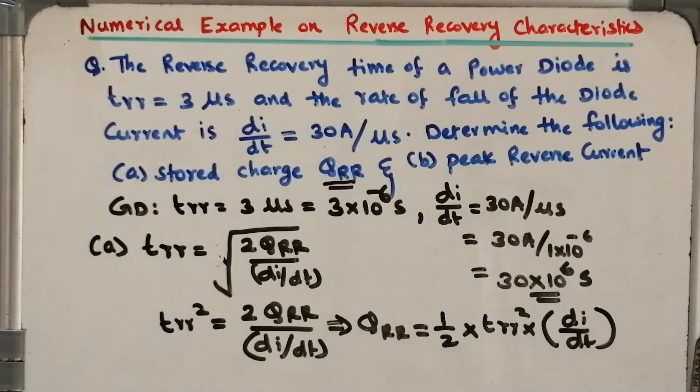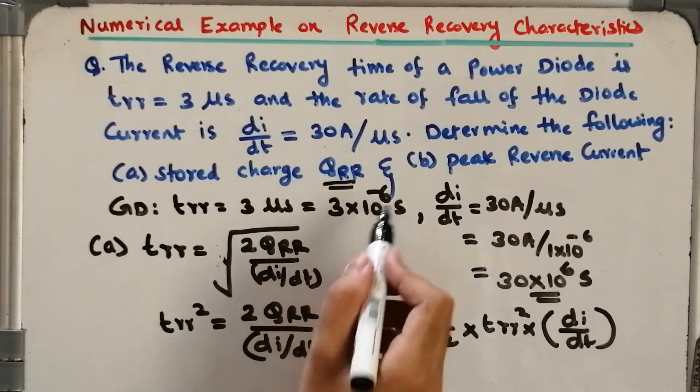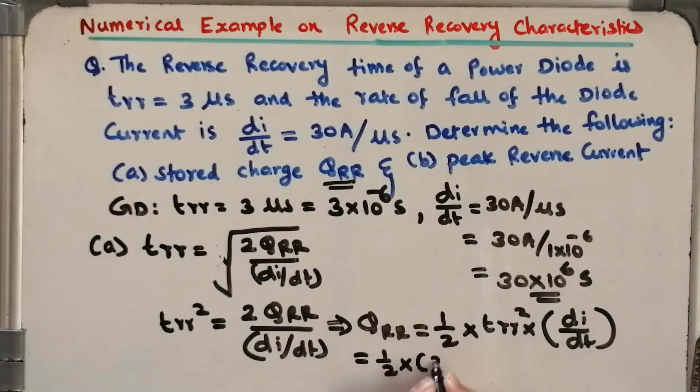You can substitute the values. That means half times TRR, which is 3 times 10 to the power minus 6, the whole squared, times dI/dt.